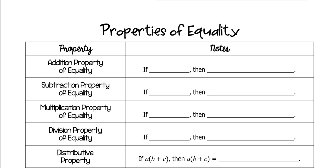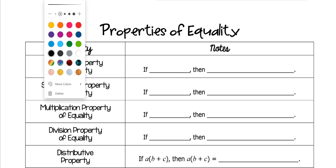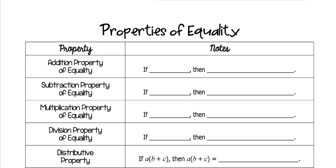Hey guys, today we're going to work on properties of equality, and unfortunately this is probably the worst part of geometry because it's proofs. I will try to make it as easy as possible on you. They are definitely the easier proofs to do because it all has to deal with algebra. You're really just writing what step you do each time to solve an algebraic equation.